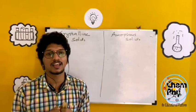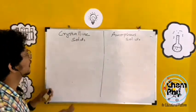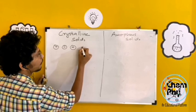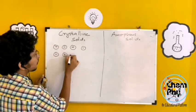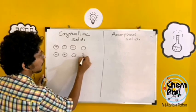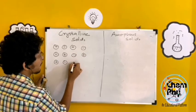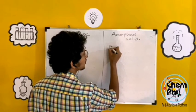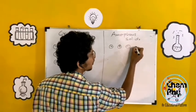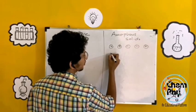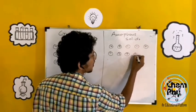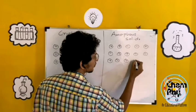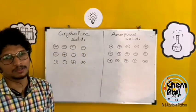First difference: in crystalline solids, the constituent particles are regular and repeating, alternating. In the case of amorphous solids, the constituent particles are randomly arranged — the arrangement is not ordered.